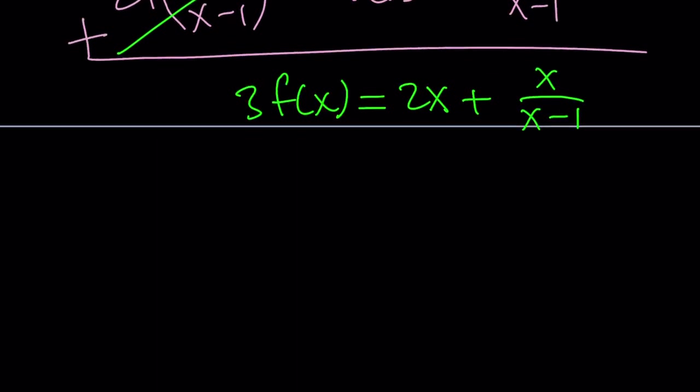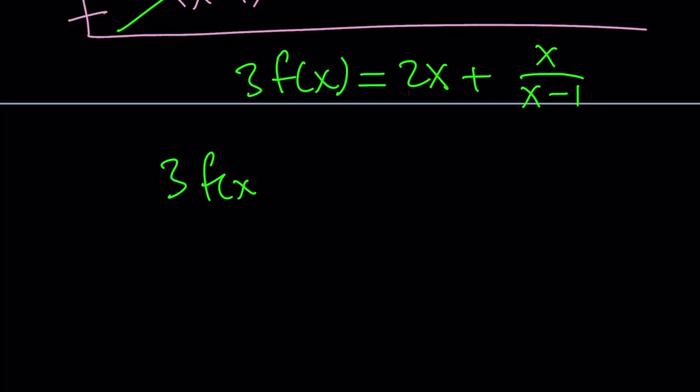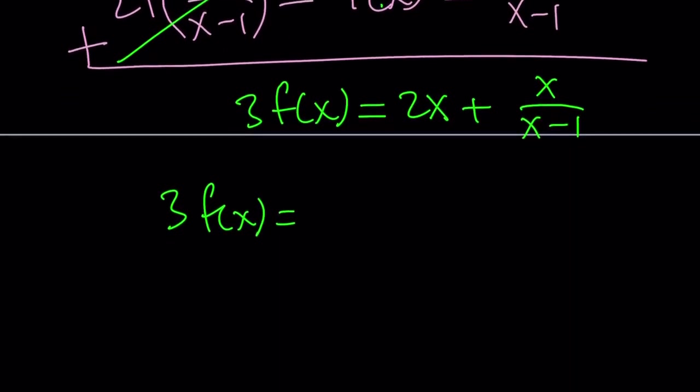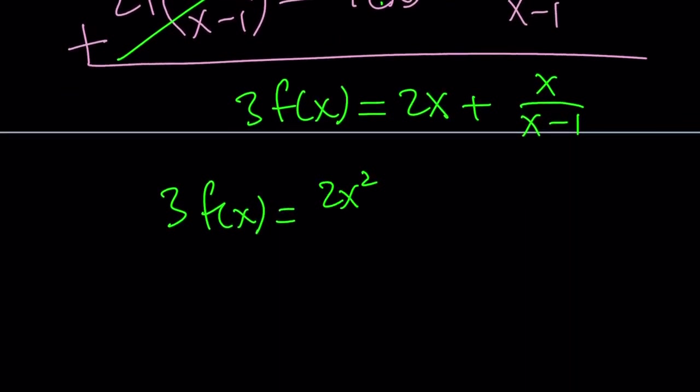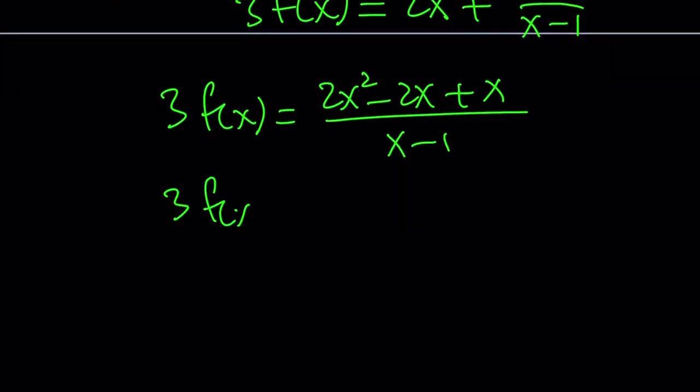Let's simplify this. 3 times f of x equals, if you make a common denominator, you get 2x squared minus 2x plus x over x minus 1. And if you simplify the numerator, you get 2x squared minus x over x minus 1.